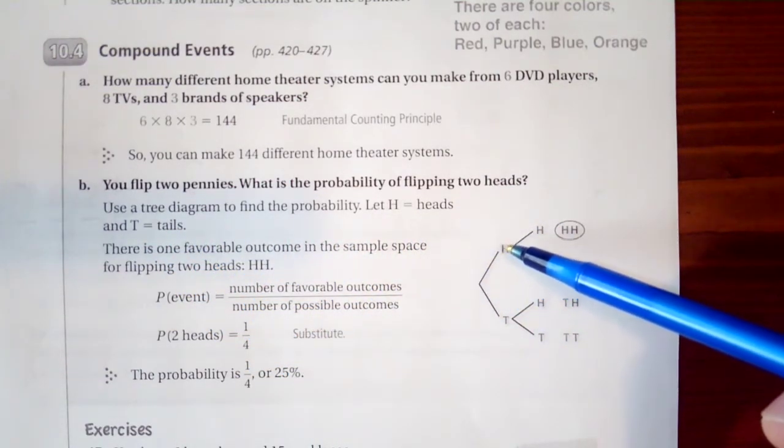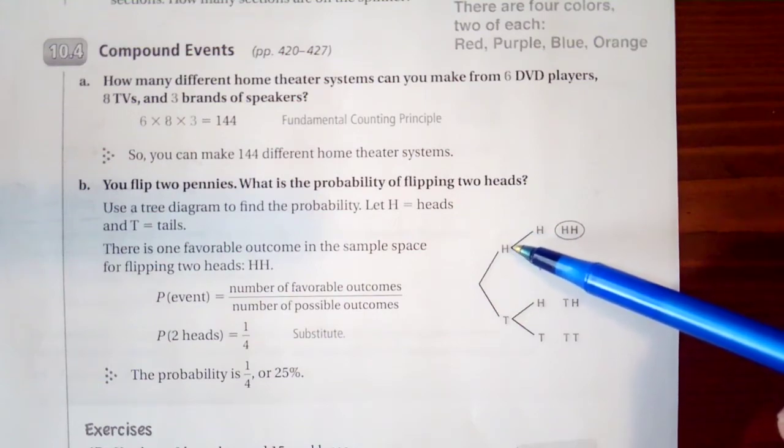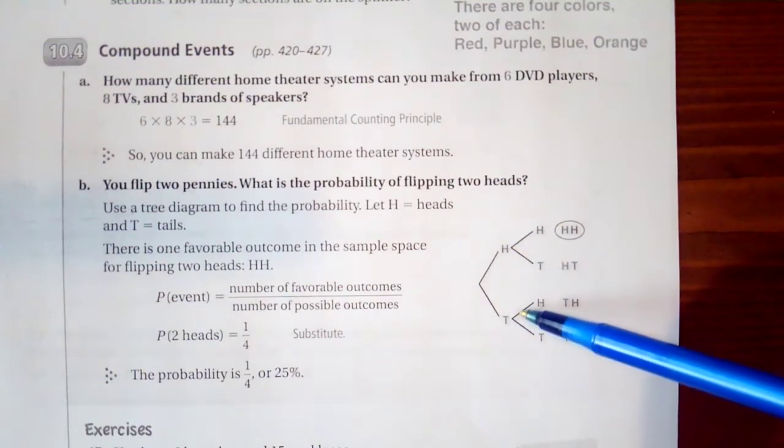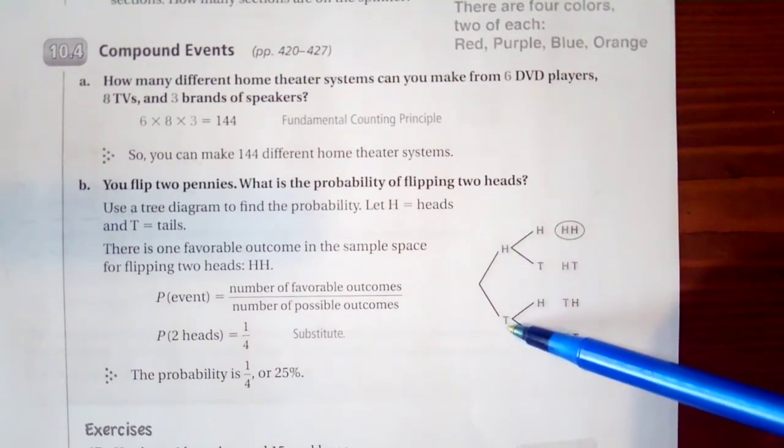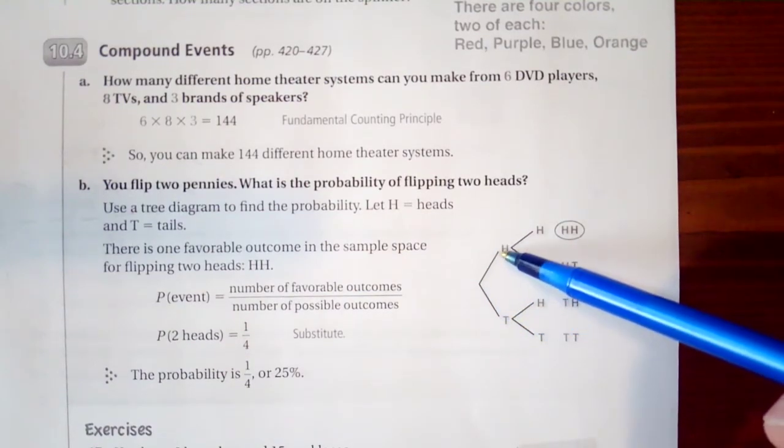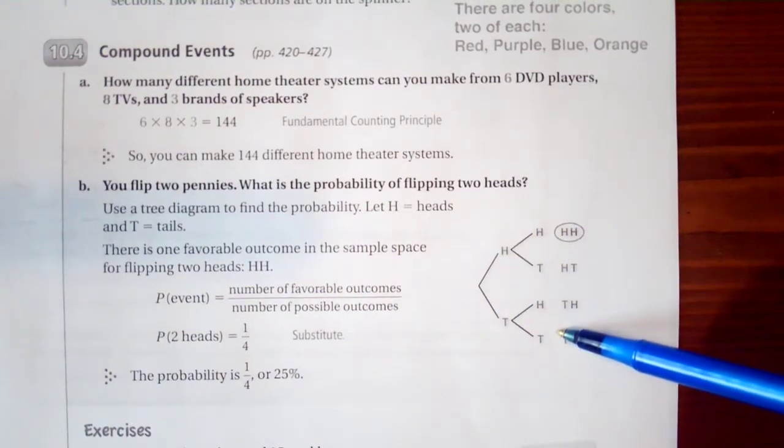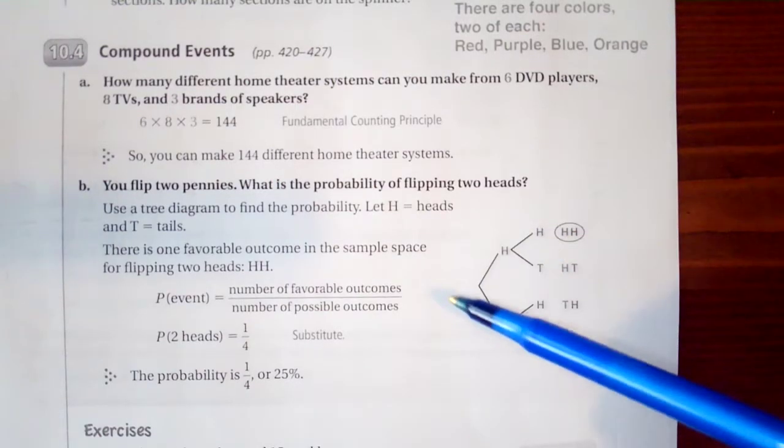We have our first flip, we either go heads or tails and then our second flip, we either go heads or tails. Depending on what our first flip is, so we go first flip is heads, second flip is heads. We have 4 possible outcomes over here.